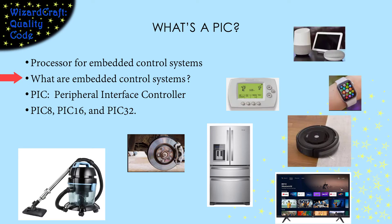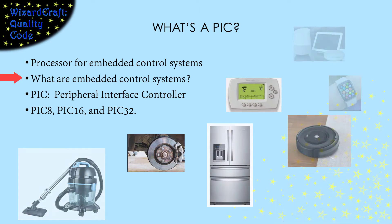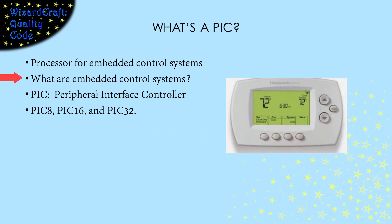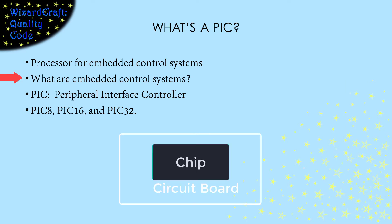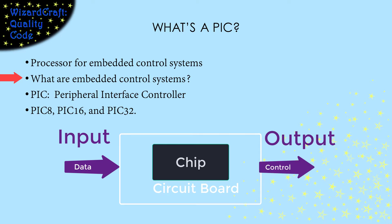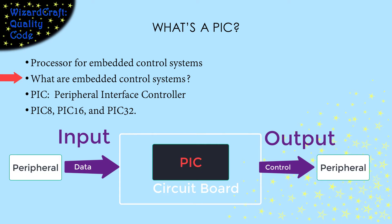In general, embedded systems sense something about their environment and use that information to control something. Your thermostat senses the time of day and the temperature around it, and uses that information to control your furnace. These systems are basically a chip in the middle of a circuit that gathers input and provides control for the output. All of these input and output things are called peripherals. The PIC processors are designed precisely for these situations, supporting gathering data from lots of types of inputs and controlling lots of types of outputs. The name PIC is an acronym for Peripheral Interface Controller, to highlight that purpose.